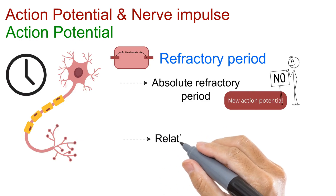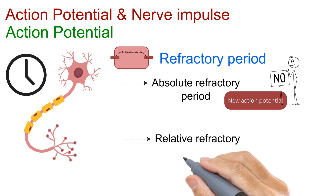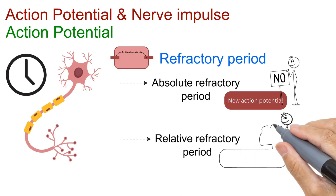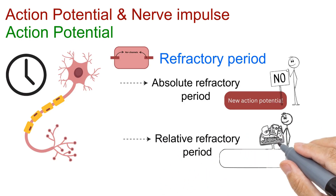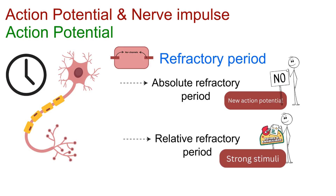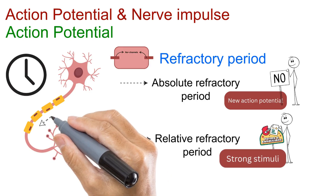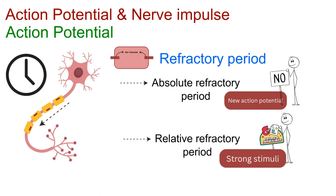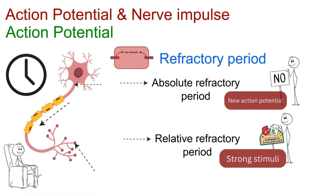Then comes the relative refractory period, when a new action potential can occur, but only if the stimulus is stronger than normal. This ensures that each impulse travels in one direction only, from the axon hillock toward the axon terminals, and prevents signals from moving backward. In simple terms, it's the neuron's brief moment of rest before it's ready to fire again.